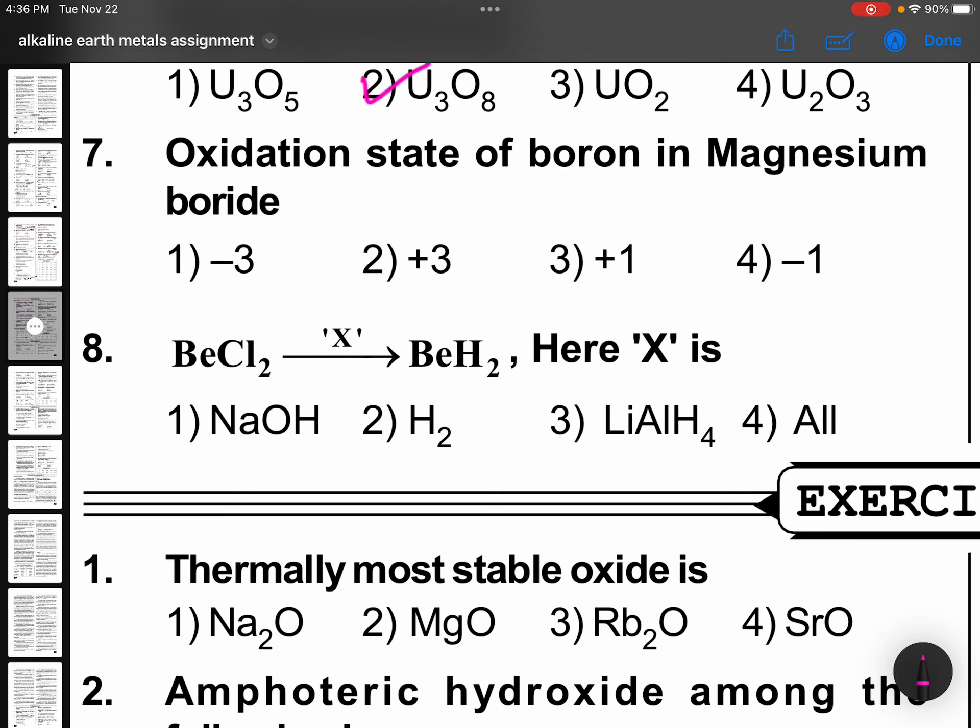Oxidation state of boron in magnesium boride is minus 3 because magnesium is metal, Mg plus 2. Boron is non-metal. So, boron valency 3, so minus 3.